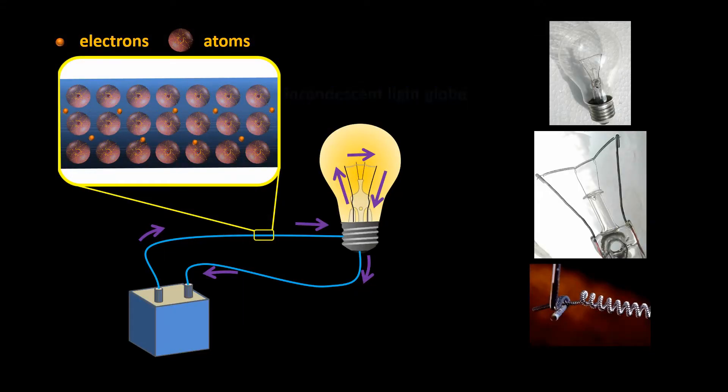So, in the case of an incandescent light globe, when it's connected, the current flows in through one of the terminals, up one of the supporting arms, across the filament, down the other supporting arm on the other side, and out of the globe through the other terminal.